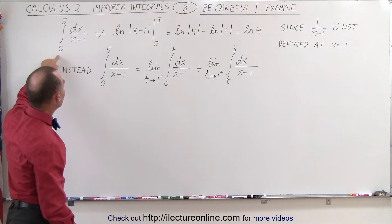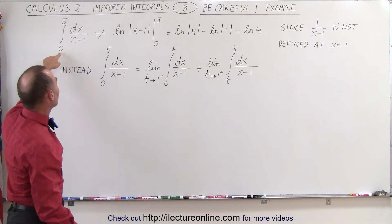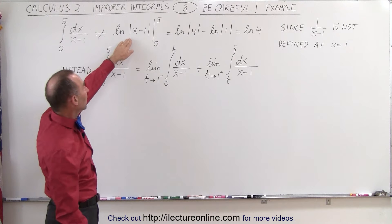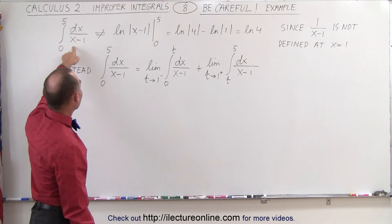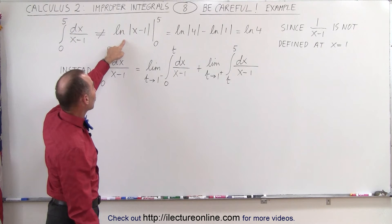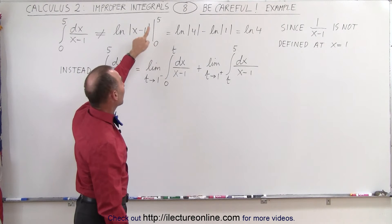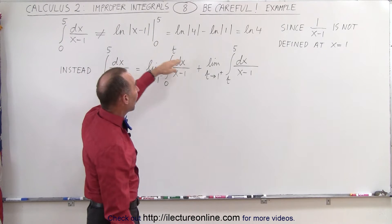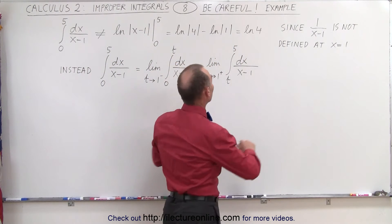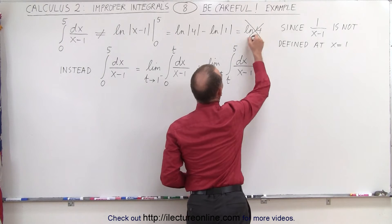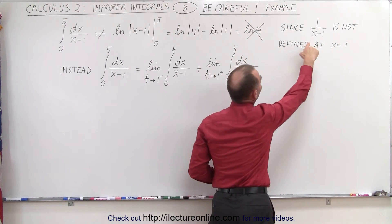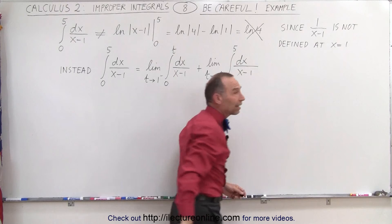So what we cannot do is ignore that and assume we can simply go ahead and integrate. One over x minus 1 integrated is the natural log of x minus 1, evaluate it between the two limits and come up with an answer, because that would not be correct. The reason is that 1 over x minus 1 is not defined at x equals 1.